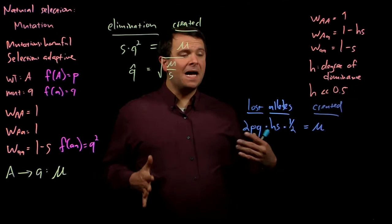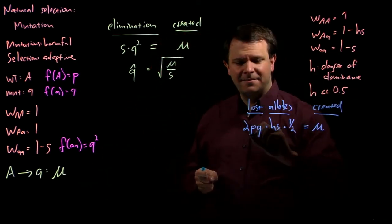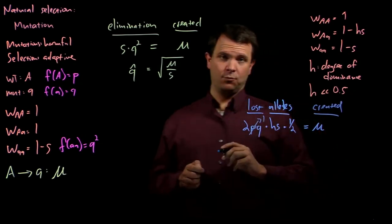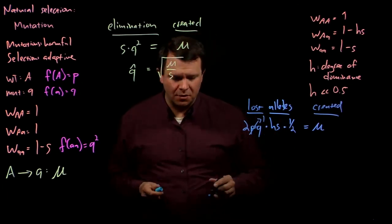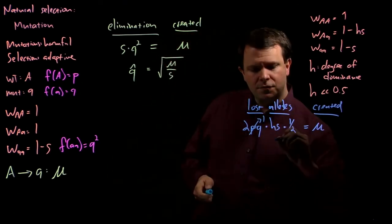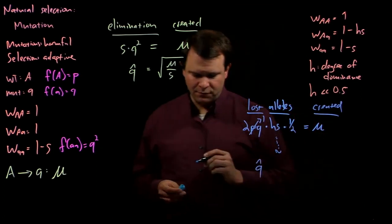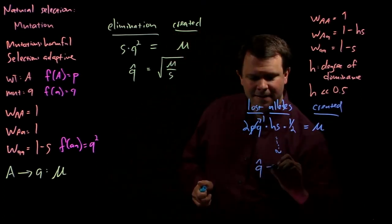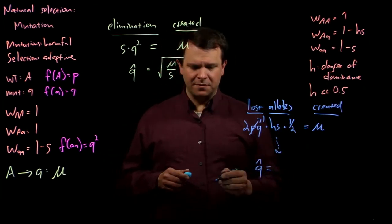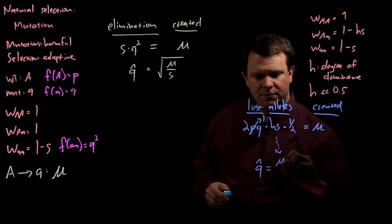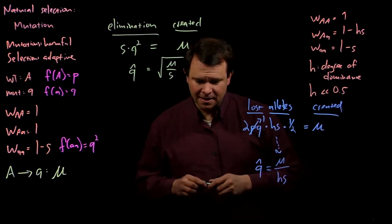Because this harmful allele is very rare, we can actually estimate P as 1. P is so close to 1 that we're just going to go ahead and call it 1. If you do a little bit of algebra, then you end up with Q hat—the proportion of mutant alleles at equilibrium—equal to mu over H times S.